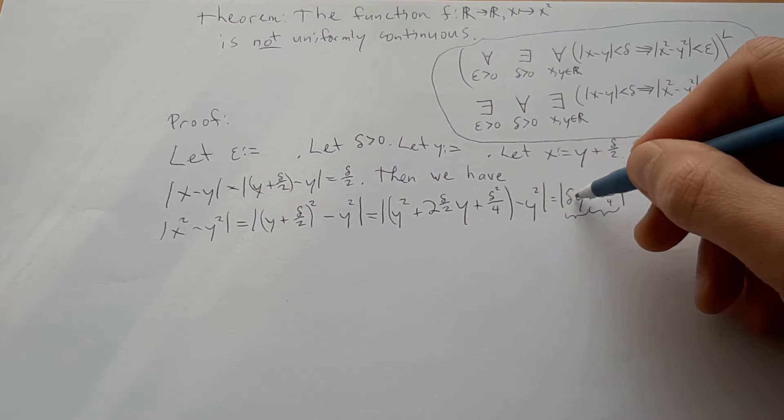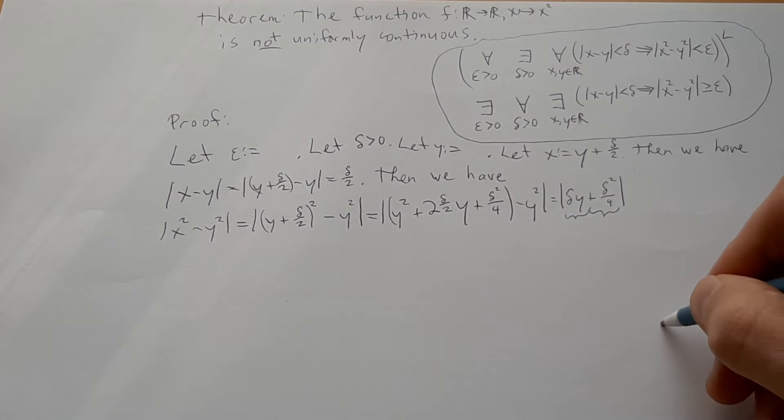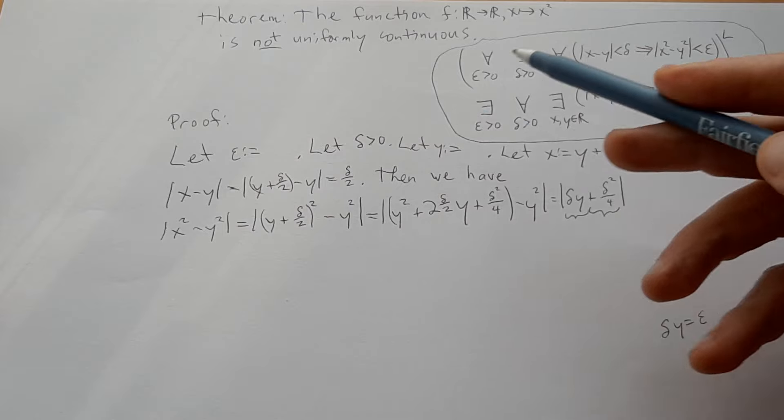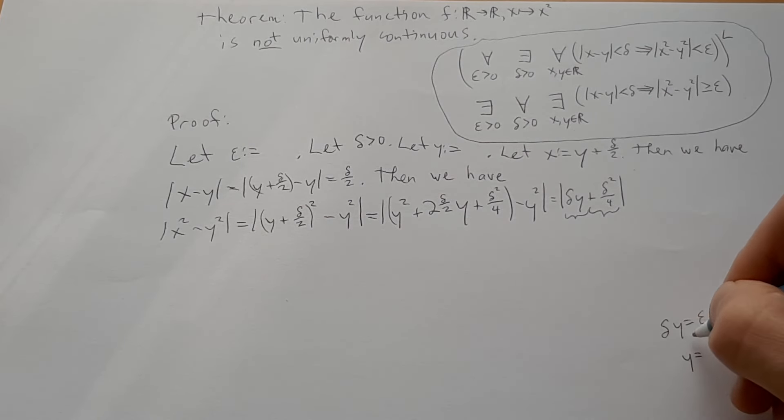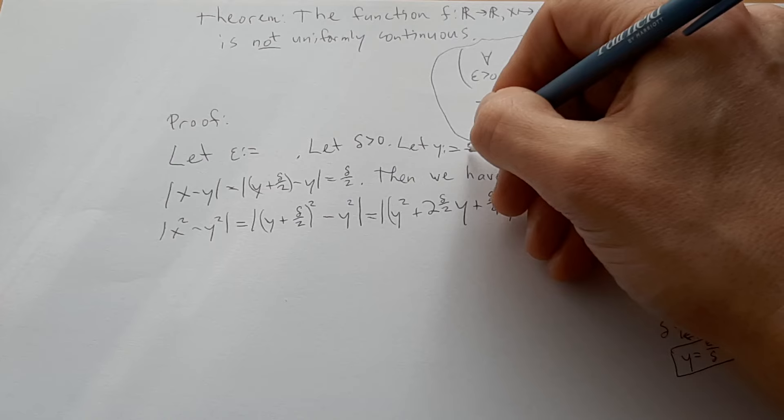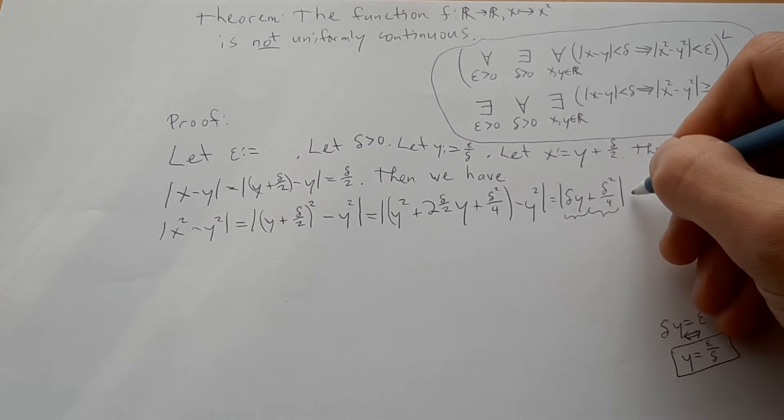If that part right here could be equal to epsilon, then we know this whole thing would at least be greater than or equal to epsilon. So let's just set this equal to epsilon. We'll go off to the side here. We'll just say delta y is equal to epsilon. If we divide by delta, and we do know delta is not zero, then we would get y is equal to epsilon divided by delta. It's just a bit of a change of form here. Okay, so we know what y would have to be. So let's just say epsilon divided by delta.